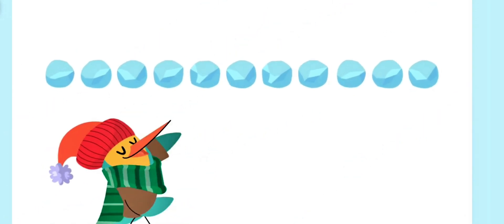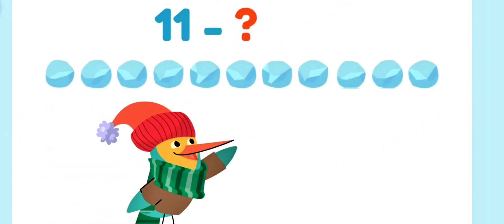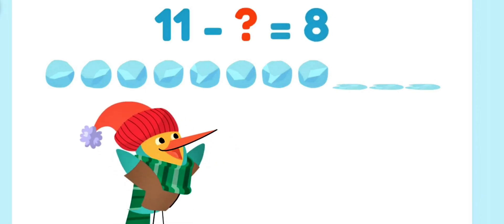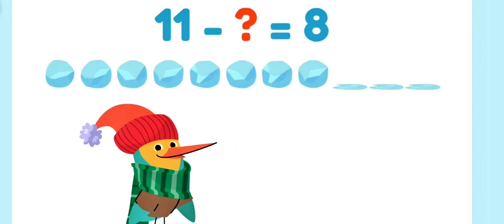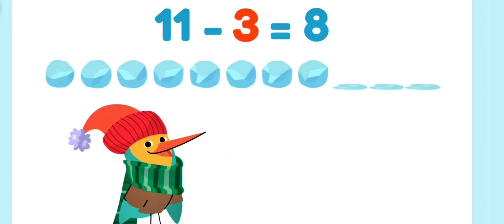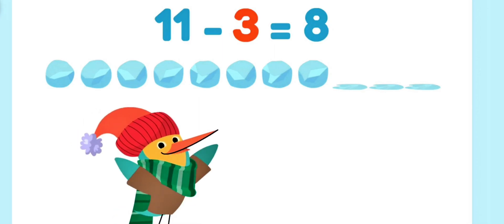It's snowing! Look at all the snowballs I made! I had eleven, but then some of them melted! So now there are eight left! How many melted? One! Two! Three! If we take three away from eleven, we get eight!